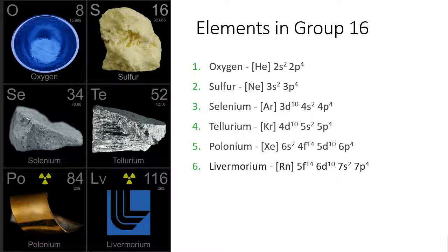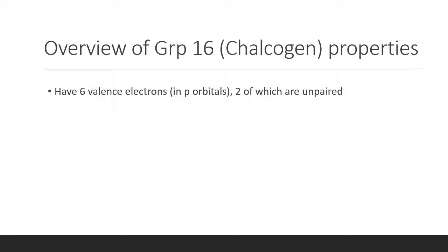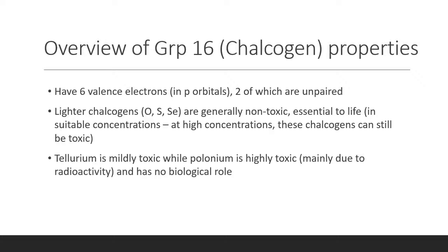Here are the electronic configurations. As a general overview of their properties, chalcogens have 6 valence electrons, 4 of which are in their p orbitals and 2 of which are unpaired. The lighter ones are generally non-toxic and essential to life. However, the heavier ones are radioactive and do not have any biological role.